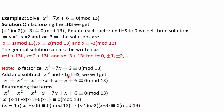Let's solve another question. If we are asked to solve x³ - 7x + 6 ≡ 0 (mod 13), and we factorize the left-hand side, we get (x - 1)(x - 2)(x + 3) ≡ 0 (mod 13). Equating each factor to 0 gives three solutions: x = 1, x = 2, and x = -3. So the solutions are x ≡ 1 (mod 13), x ≡ 2 (mod 13), and x ≡ -3 (mod 13), with general solutions x = 1 + 13t, x = 2 + 13t, and x = -3 + 13t.